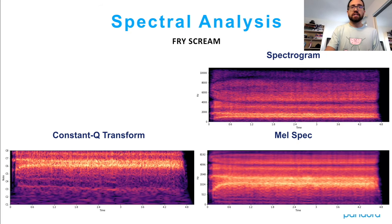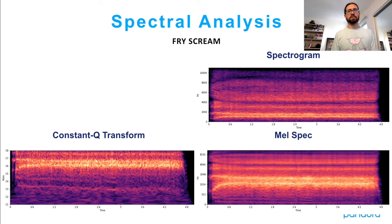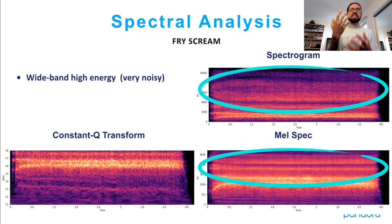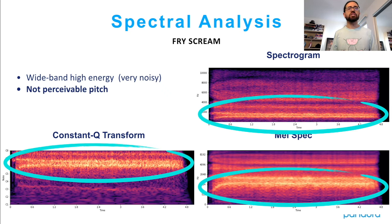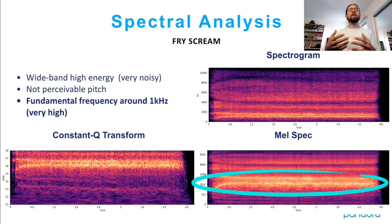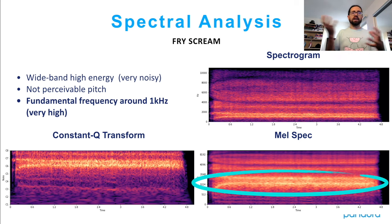The fry scream looks pretty different. In this case there's a wide-band high-energy signal — very noisy in the higher frequencies, almost uniform energy across the whole spectrum. Again, no perceivable pitch; you can't see narrow horizontal lines. But the fundamental frequency, if there were one, would be around 1000 Hz — much higher than the death growl — which gives it the quality of being slightly brighter. The higher frequencies are way more enhanced than in the death growl.